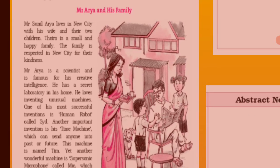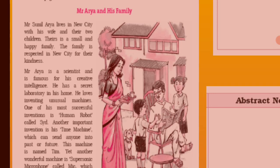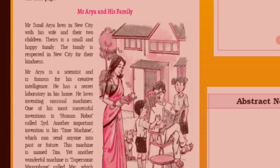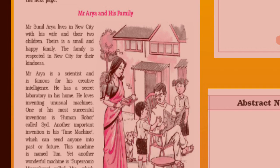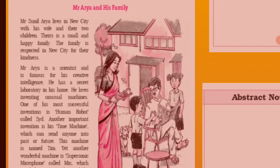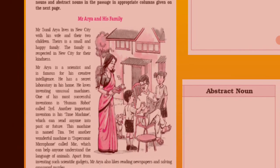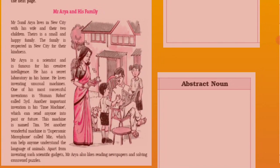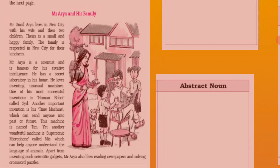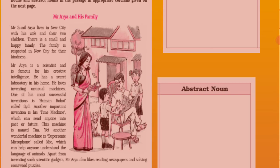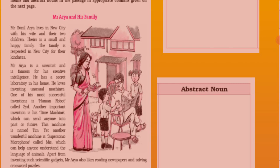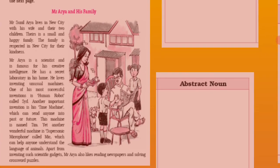If you remember, the proper noun is the name or particular name of any person, place, or thing. One of the most important features of a proper noun is it always begins with a capital letter. Let's find out some proper nouns here. Wherever you think it's a name — a particular name of a person, place, or thing — that name is called a proper noun.